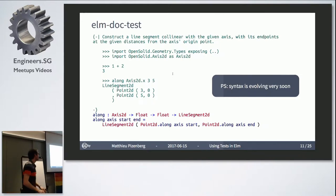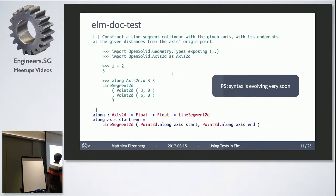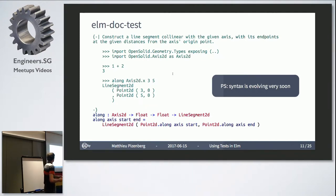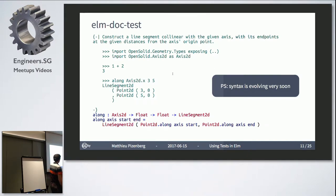So here we come to the part with some code. You've already been introduced to type notations of functions. I've been working with a guy doing a lot of geometric stuff to draw geometric figures in web pages. There is this function that creates a line segment along an axis from one point to another — you start from the first point, go to the ending point of the line, and it creates a segment.